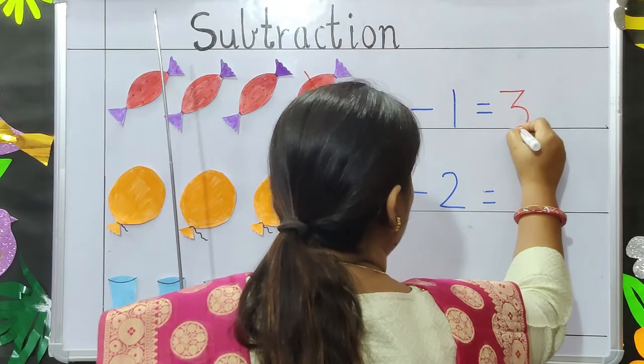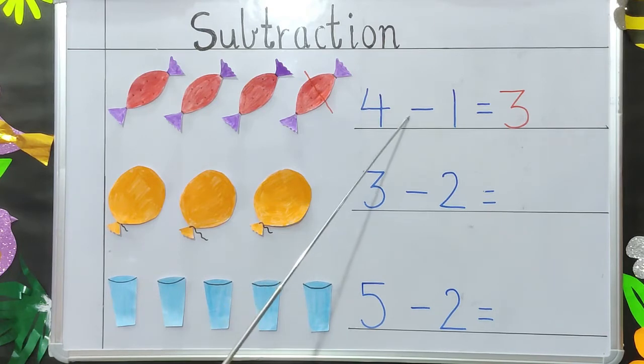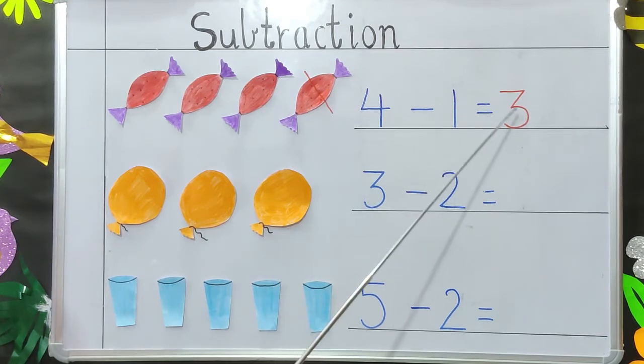Children, here, remember, this is the sign for minus. This is the sign for subtraction. So, 4 minus 1, the answer is 3.